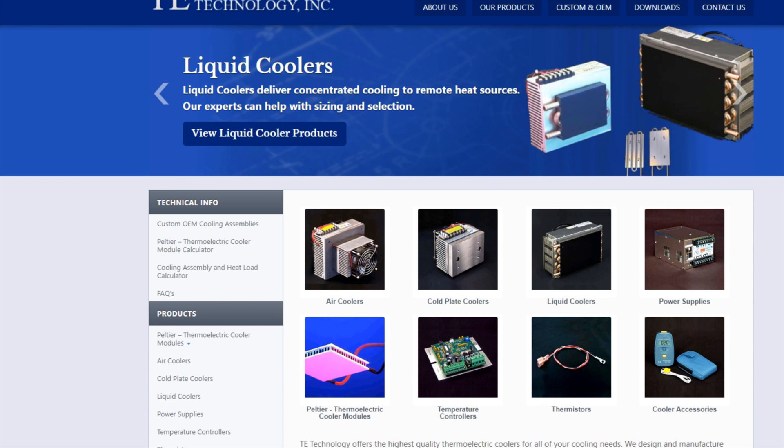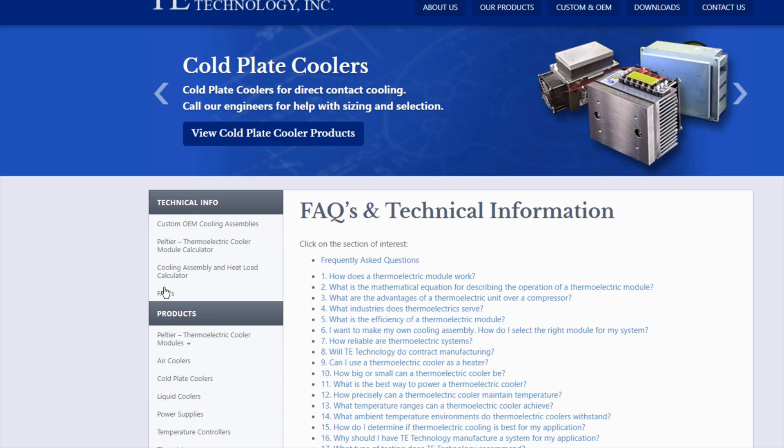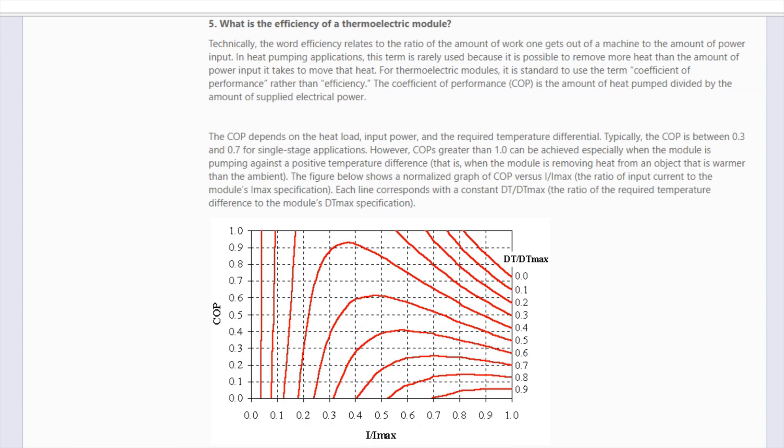So here is a TEC manufacturer. They have an FAQ and they have one on efficiency. What do they say about it? What is the efficiency of? Technically the word efficiency relates to the ratio of the amount of work one gets out, the result of a machine, to the amount of power in. So they are also agreeing that it is not an efficiency statement.